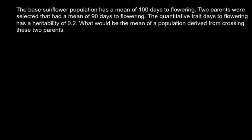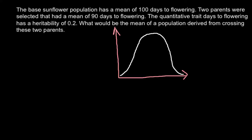So, first of all, I want to give you some theory on how to solve this problem. Let me draw a graphic here. A normal quantitative trait is distributed like a bell shape. And according to our problem, the mean of the population would be here — this is going to be MO, mean of the original population. According to our problem, this is going to be 100 days.